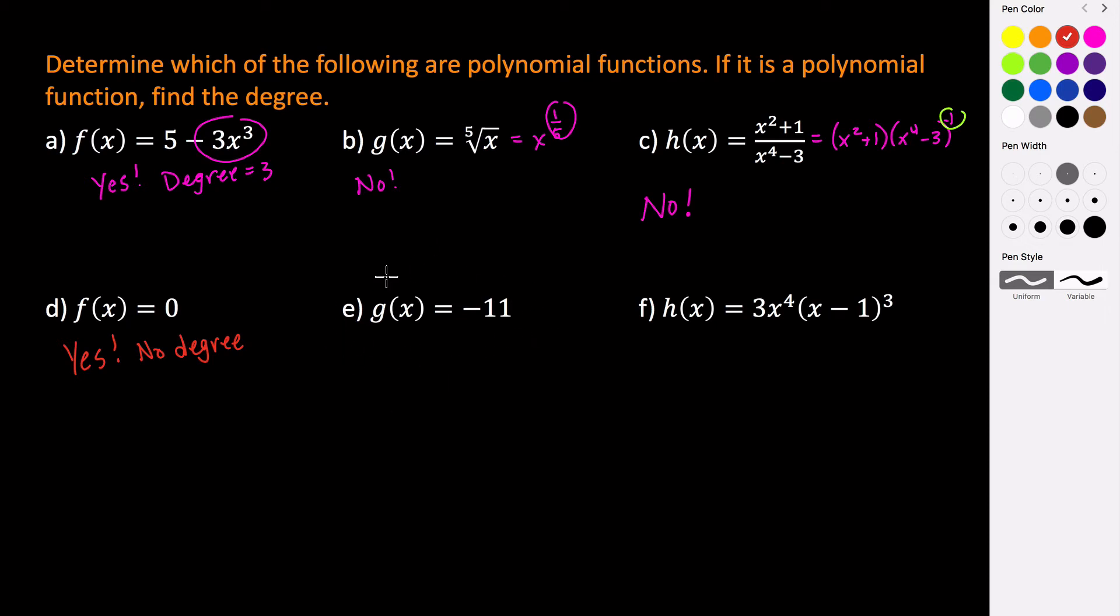On the contrary to that, this, which is just a constant function, is also a polynomial function, but its degree is zero. It has a degree equal to zero.